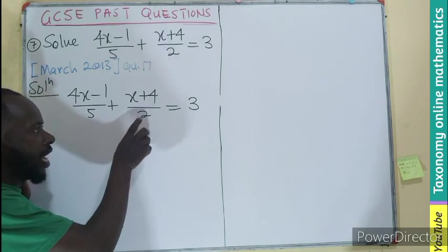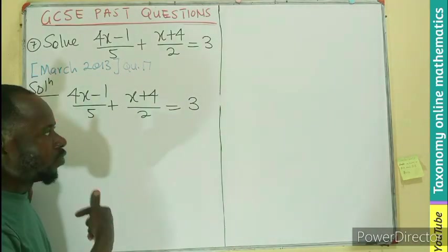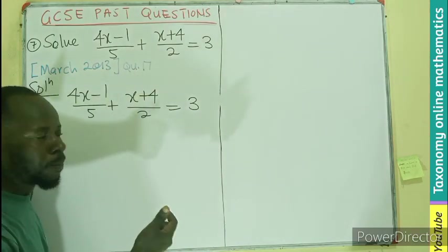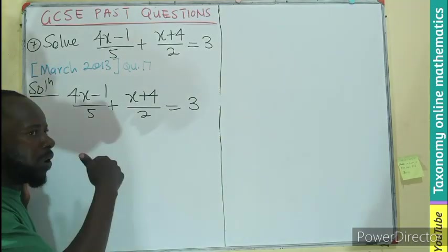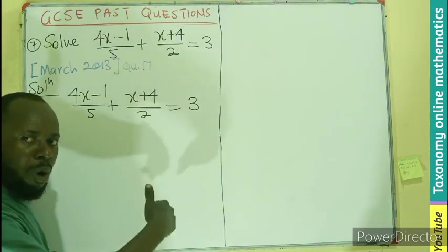When we have an equation that involves fractions, the first thing we can do is to clear the fraction by multiplying through by the LCM of the denominators. So we are looking for a common multiple of 5 and 2.